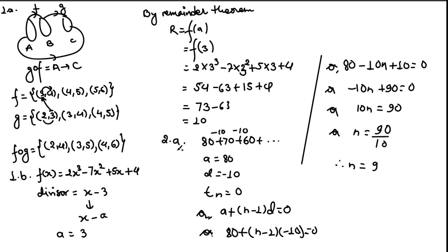Question number 2a: if the nth term of the series 80 + 70 + 60 + ... is 0, find the number of terms. In this series, the first term a = 80. The difference between consecutive terms is −10, so it is arithmetic. Using the general term formula tₙ = a + (n−1)d: 80 + (n−1)(−10) = 0, and solving we get n = 9. There are 9 terms in the given series.